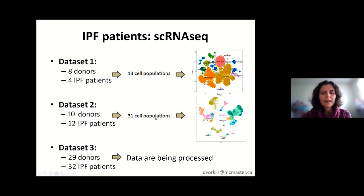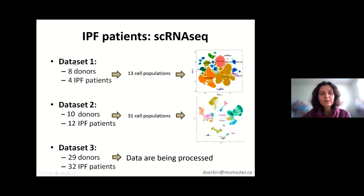These different numbers can be due to various reasons — some technical, like sample collection, filtering, or sorting of cells, and some analytical. For example, the first dataset is much smaller at about 40,000 cells, while the second dataset has about 80,000 cells. So some populations are too small to be identified in the smaller dataset. These plots on the right are showing the cell populations that were found.